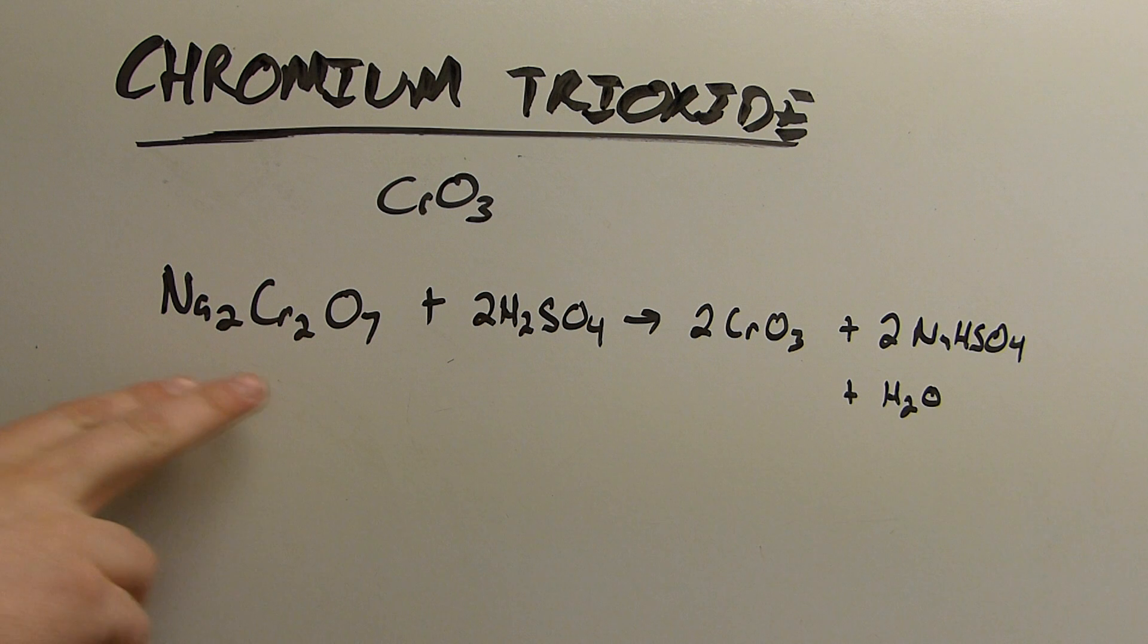I'll be making the chromium trioxide by reacting or rather dehydrating chromic acid by reacting sodium dichromate with sulfuric acid to form the chromium trioxide which precipitates and sodium bisulfate in water.